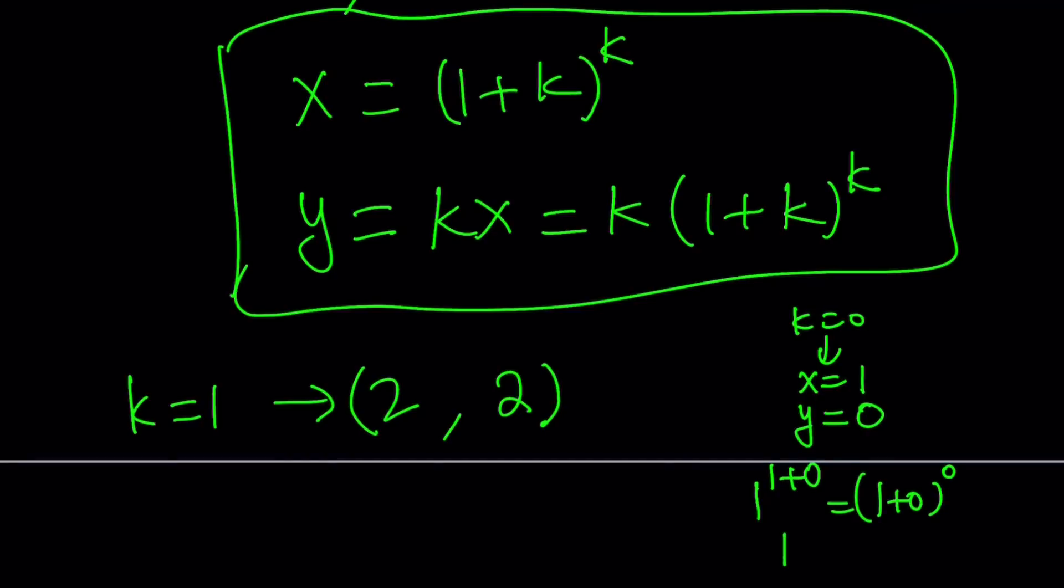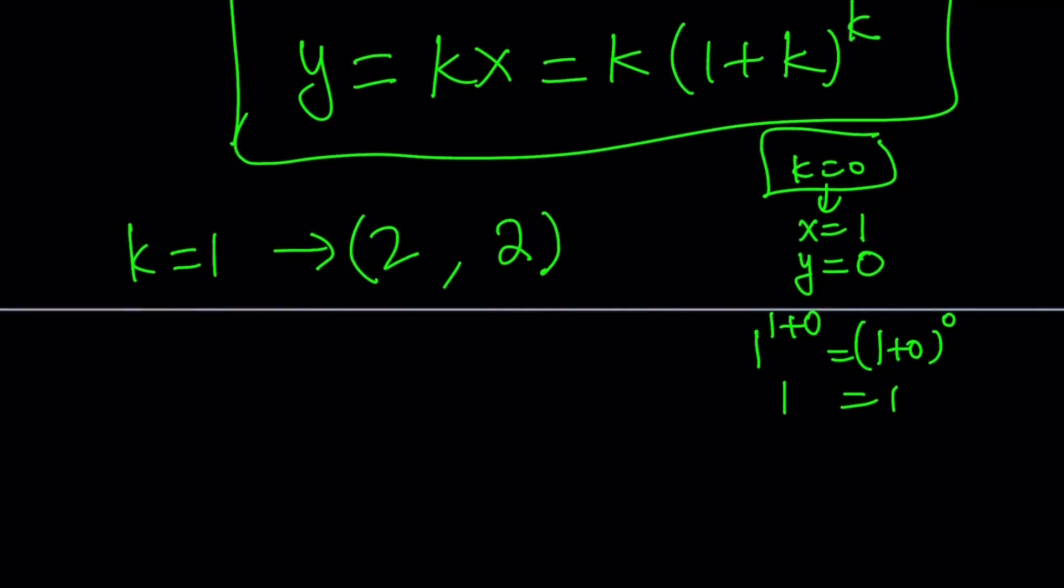x to the power one plus zero and one plus zero to the power zero. So this is one and this is also one. So yes k equals zero works. One comma zero is a solution. We got a solution. They're not both zero.